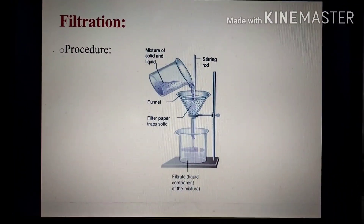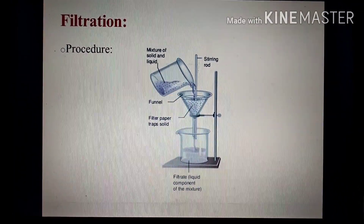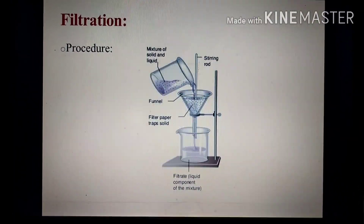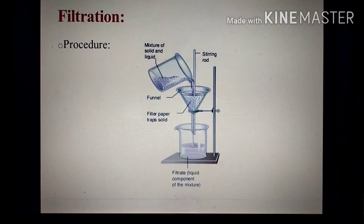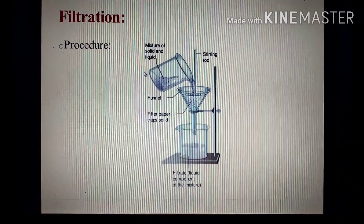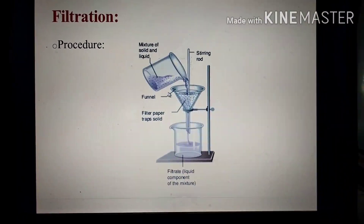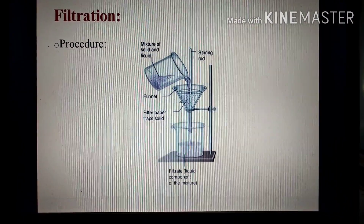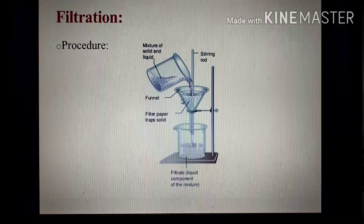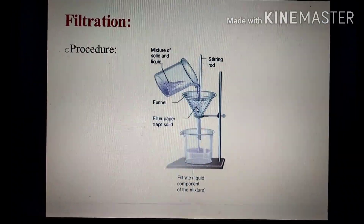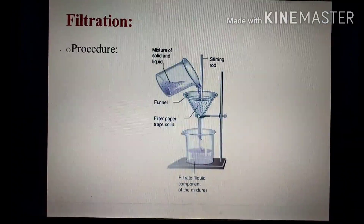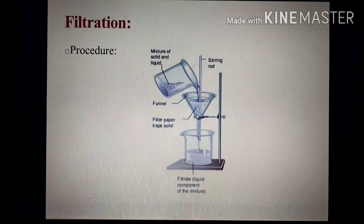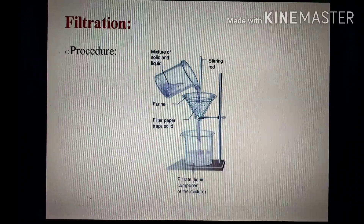Filter paper کو ہم one-third fold کرتے ہیں اور اس کے تین parts میں سے ایک side پہ اور تین parts دوسری side پہ کر دیتے ہیں، پھر اس کو funnel میں fix کر دیتے ہیں۔